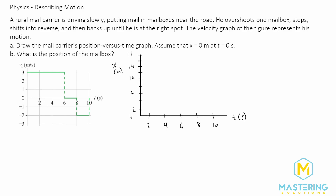Starting out at two seconds, the area under the curve for this little square is two by three, so it's six. We'll start out at zero, and then at two seconds, we're up at six meters.